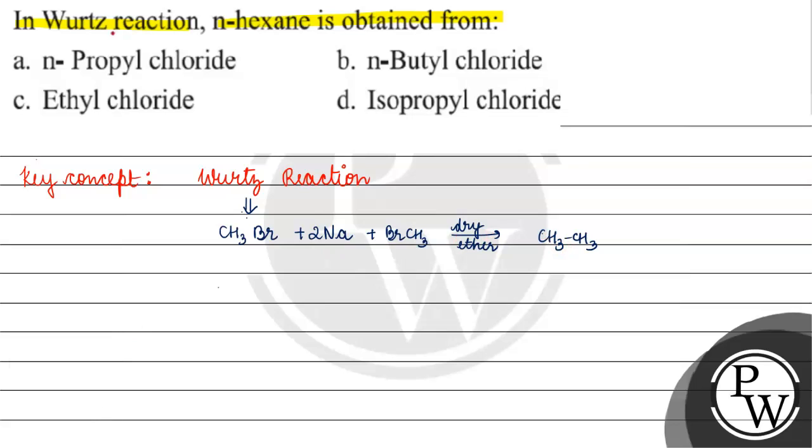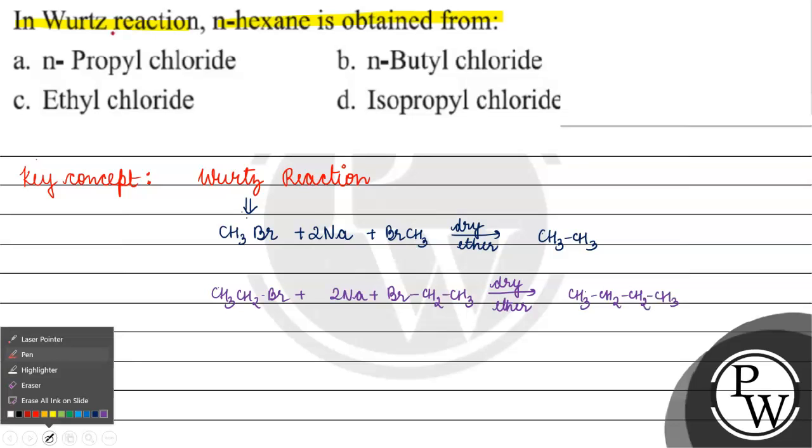Suppose we have such an alkyl halide, what will form? If we have such an alkyl halide, then basically we have formation of butane. What will be formed? Butane will be formed, right?